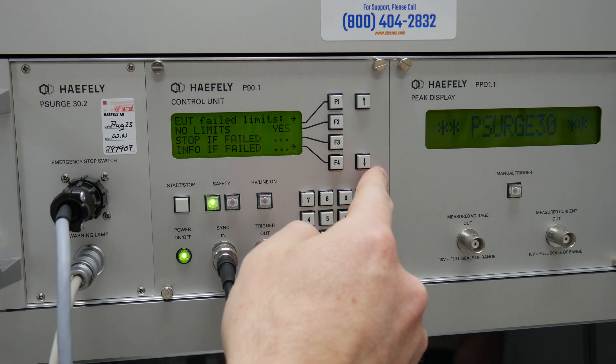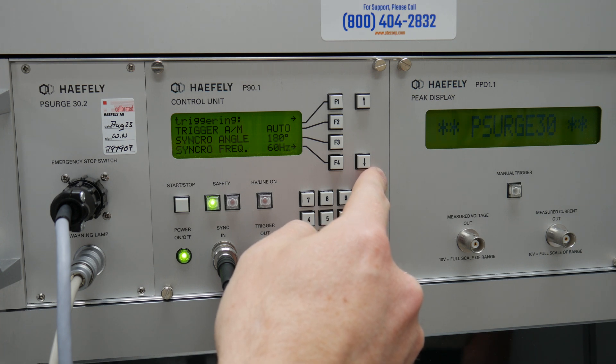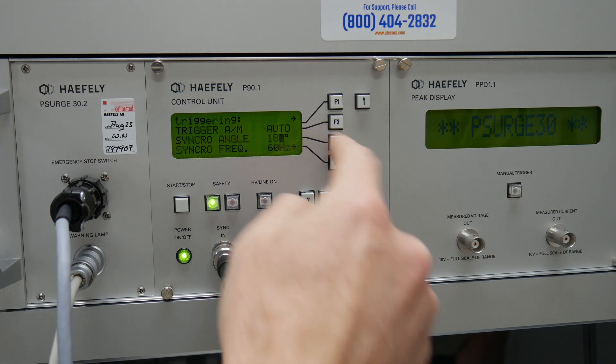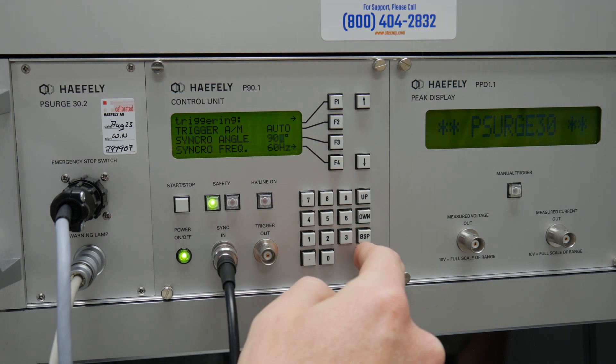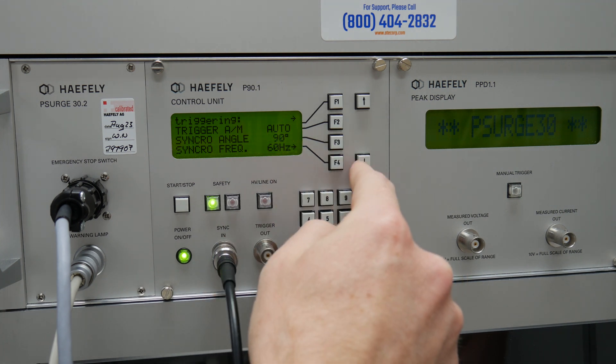You can also set your EUT limits and use triggering and set your synchronization. Right now it's set to 180. I'm going to change that to 90 degrees on my 60 Hertz waveform.